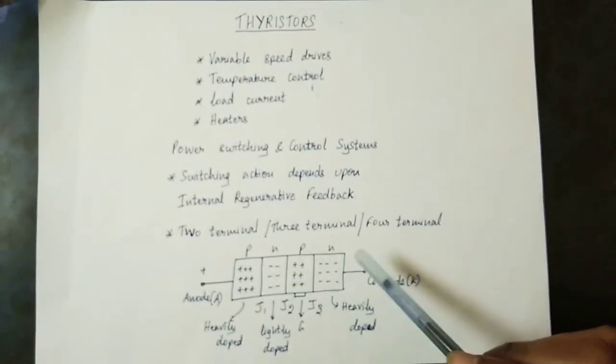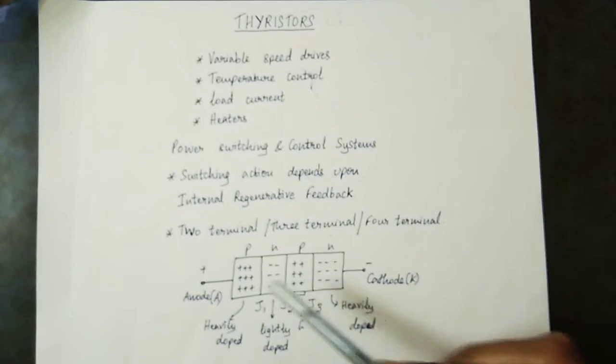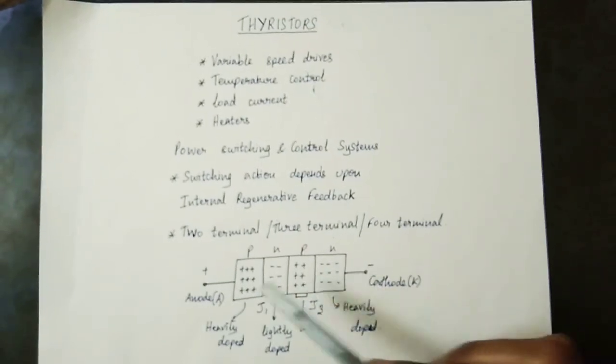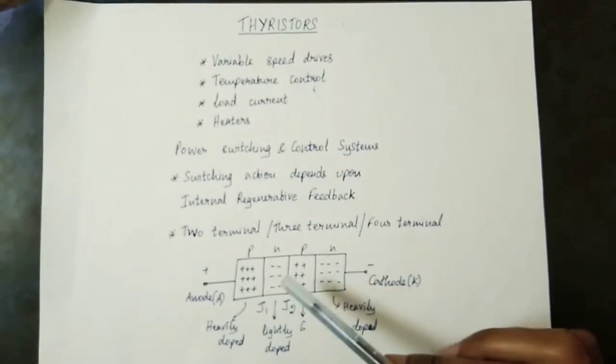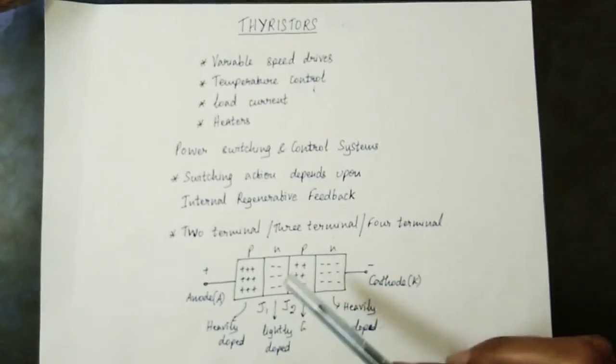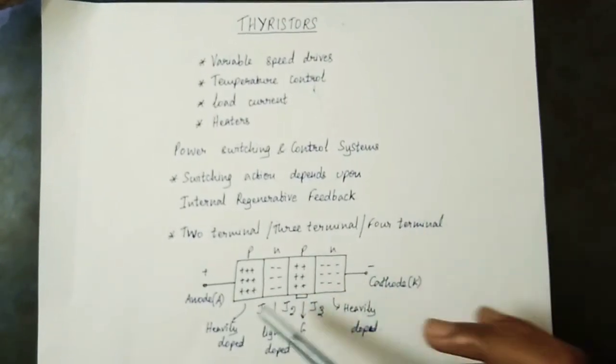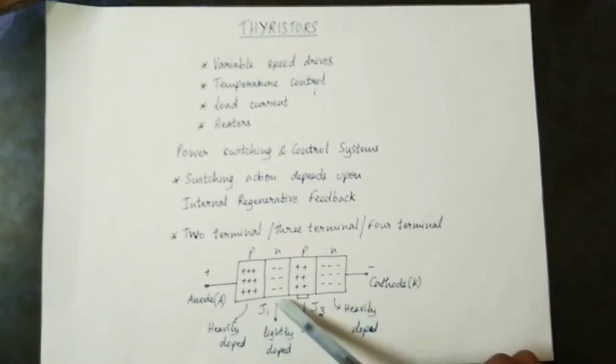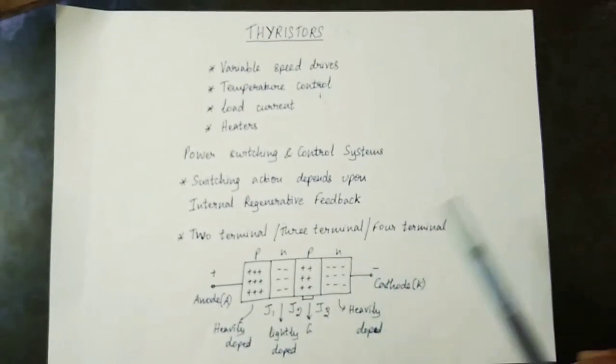Pn is a 4-layer device. Pn is heavily doped. Np is lightly doped. There are 3 junctions: J1, J2, and J3.